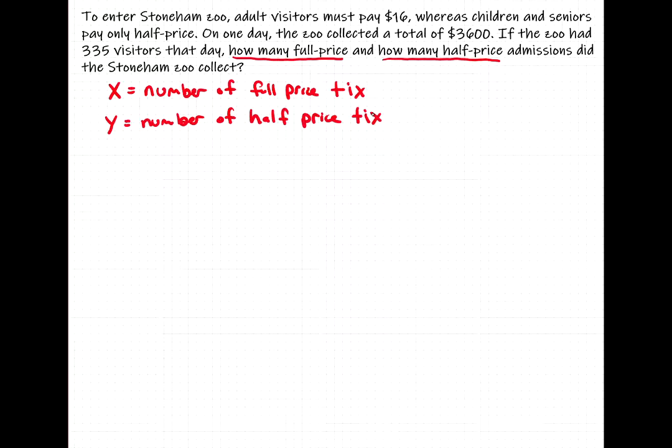So remember, that's where we always want to start. If we're going to use algebra and we're going to use variables, we have to start off by saying these are the variables and this is what they stand for. X stands for number of full price tickets, Y stands for number of half price tickets. So now going back to the problem, what do we know?